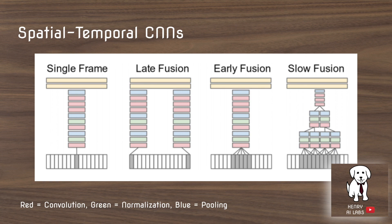The late fusion model has very wide spaces between frames used to aggregate features. In their experiments, they use 15 frames in between the two frames used in late fusion. Early fusion collects a contiguous chunk of frames and processes it similar to the single frame model. The slow fusion model takes overlapping patches, processes them in separate towers, and then combines them later on.